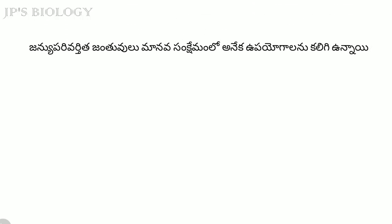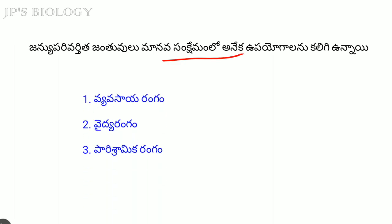The transgenic animals are going to be different types of transgenic animals. I am going to divide these into 3 categories: agriculture industry applications, medicinal applications, and industrial applications. So 3 parts are going to be divided.